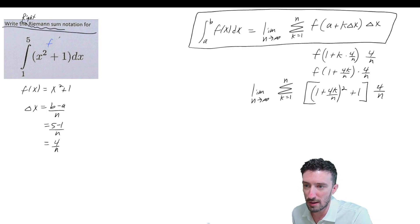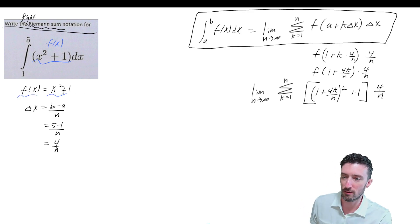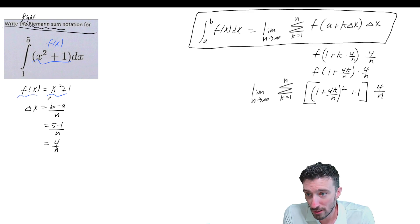We need to identify what the f(X) is. In our problem we can clearly see that the f(X) is the X² + 1, so I wrote that down right here: f(X) = X² + 1. Also we need to identify what the a and b are, so a and b in this problem will be 1 and 5.